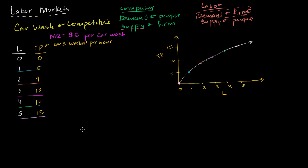In economics, when thinking about how much to produce or how much to hire, you always want to think about the incremental benefit. When thinking about cost structure, how much cost for that incremental unit? When thinking about benefits or demand, how much benefit from that incremental unit? So let's look at the marginal product of labor, or MPL — when we go from zero to one person, the change in total product is five. We can view that as the average marginal product between those two points.